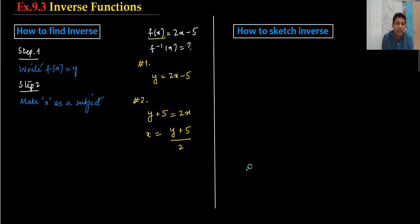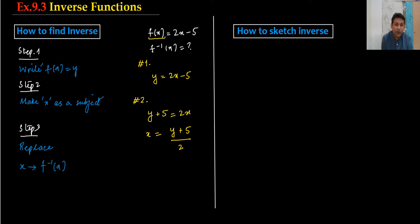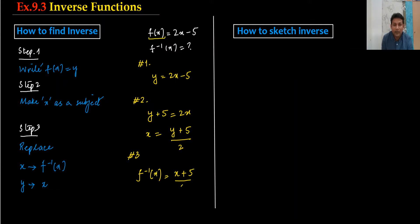In step number three, which is very simple, we do two replacements. We replace x with f⁻¹ and replace y with x. So x becomes f⁻¹, and y becomes x. Therefore f⁻¹(x) = (x + 5) / 2. And this is how we find the inverse function.